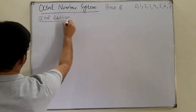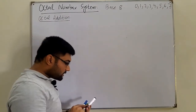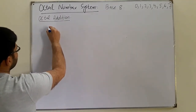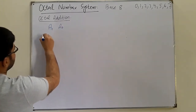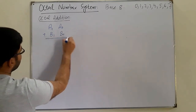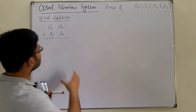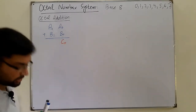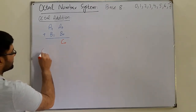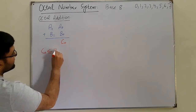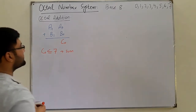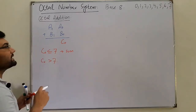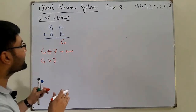For octal addition, we have some rules. Let's say we add two octal numbers: A1 A0 plus B1 B0. The rightmost digits are added first — A0 is added to B0, resulting in C0. If this C0 is less than or equal to 7, then C0 is the direct sum. But if C0 comes out to be greater than 7 — meaning 8, 9, 10 — which is not included in this system, we split it into a sum and a carry.